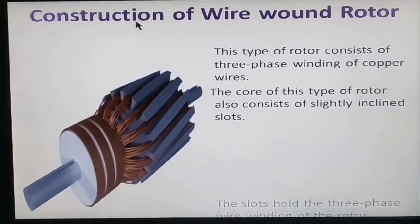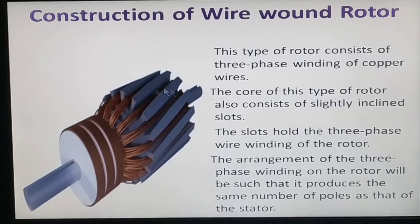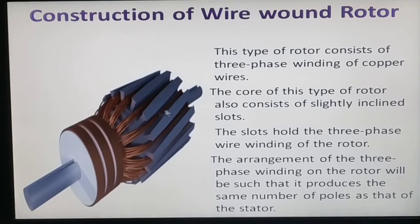Next is the construction of the wound rotor. This type of rotor consists of three-phase winding. One end of the winding is star-connected. The core of this type of rotor has slightly inclined slots. The rotor has three-phase winding in its slots, and the number of poles of the rotor winding is the same as the stator.